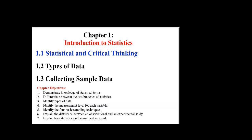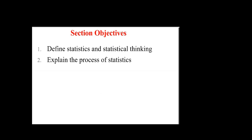Introduction to stats. The idea is we have to have statistical and critical thinking types of data, and then in the next section we look at how we collect sample data. In this chapter we are going to look at statistical terms, differentiate between different branches of statistics, identify types of data, measurement levels, sampling techniques, and the difference between observational and experimental study. The section covers statistics and statistical thinking and explains the process of statistics. Let's get started.